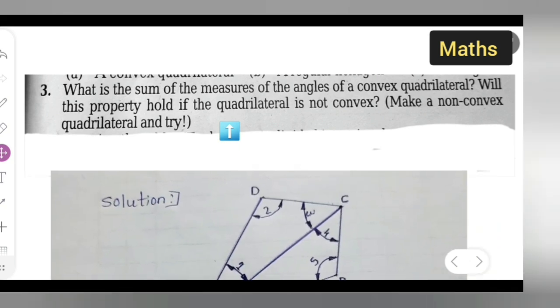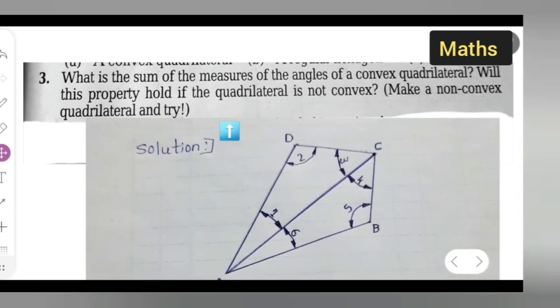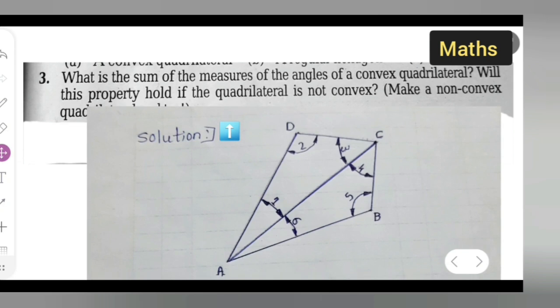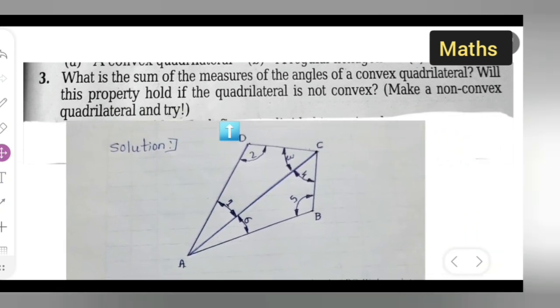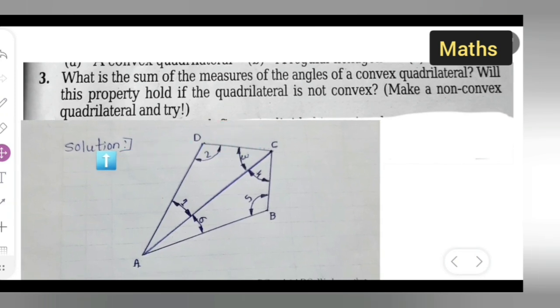First, you can draw this quadrilateral. You can take down this solution and draw quadrilateral ABCD. Here you can see angle 1, angle 2, angle 3. Diagonal AC is a diagonal and it divides this quadrilateral into two halves. In one half there will be angle 1, 2, 3. In the second half there will be angle 4, 5, 6.